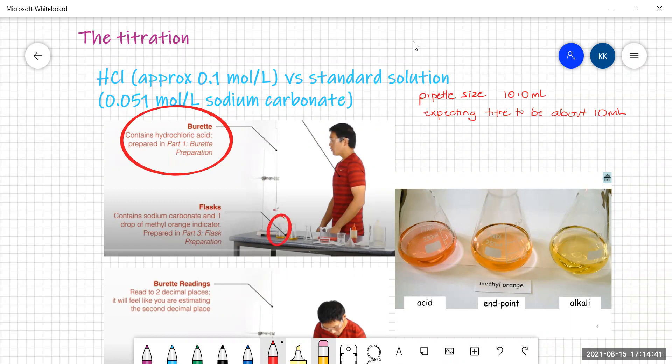So you can see here we've got some conical flasks. That's going to contain your sodium carbonate solution, which for me will be 10.0 mils, and one or two drops of methyl orange indicator. It's up to you. Depends on your colour vision and how good you are at seeing small numbers of drops change colour.